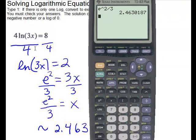When we look back for our check, if we plug in 2.463 times 3, that is certainly going to give you something positive and bigger than 0, so we're fine with our answer.